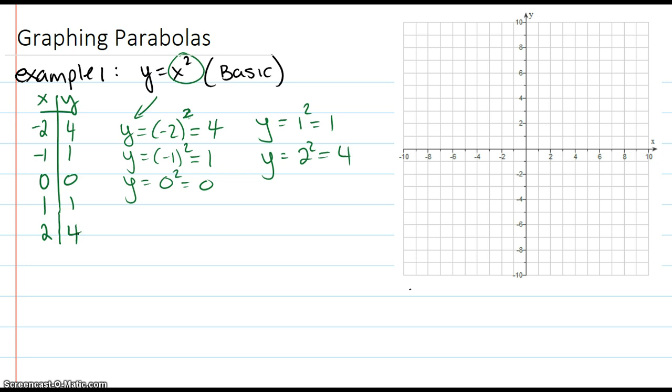And then I'm just going to plot these points. Negative 2 on the x we know is 4. Negative 1 we know is 1. 0 is 0, that's the origin. 1 is 1.